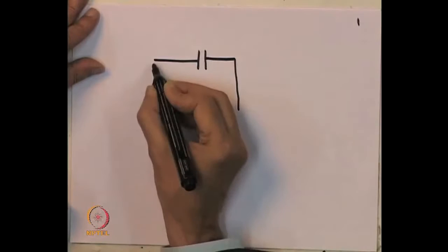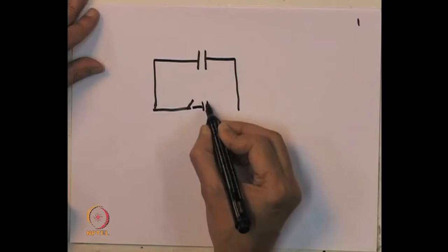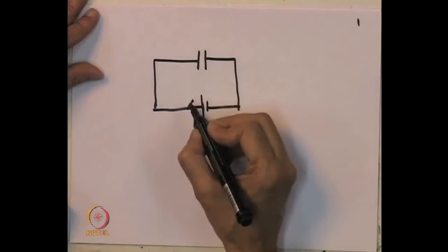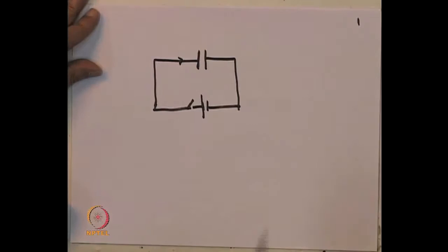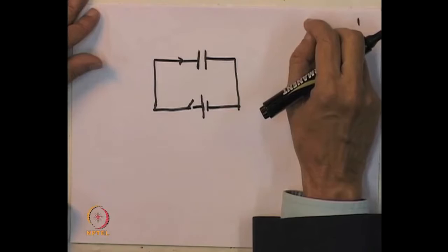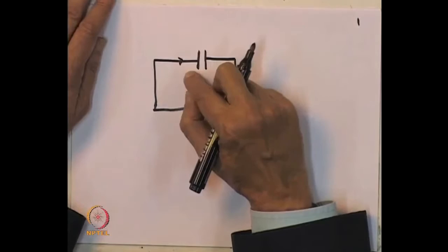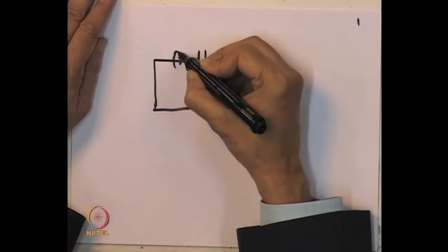In the last lecture we had introduced a concept called the displacement current. Just to recall, because it is a rather unusual idea, we had discussed the phenomena of charging of a capacitor. For example, if I have a capacitor in a circuit where there is a battery and a key, when I switch on the key, the charges move to the plates, charging one plate positive and the other negative.